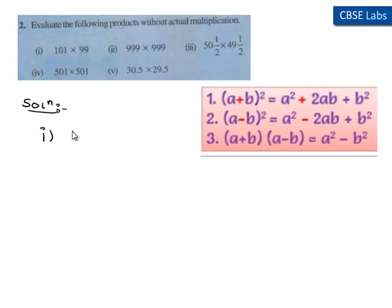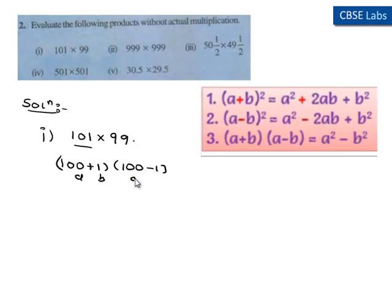Taking down the first one: 101 times 99. Here, 101 can be written as 100 plus 1, and 99 can be written as 100 minus 1. Then it is in the form of (a + b) times (a - b). The product is in the form of (a + b)(a - b), which matches the third identity.